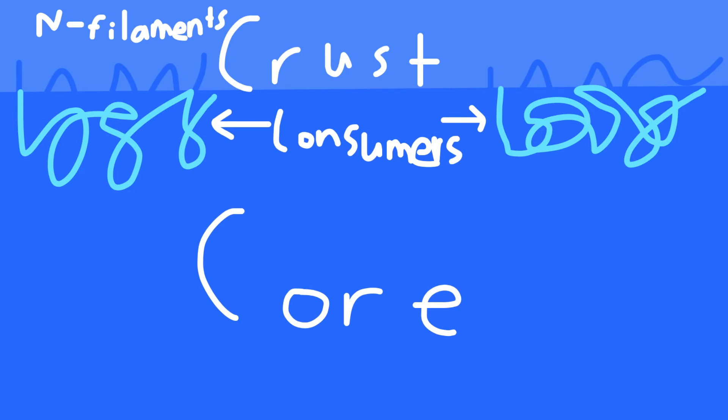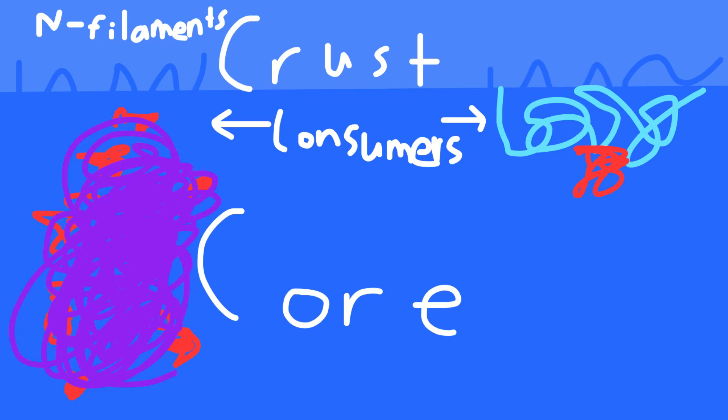Consumers absorb energy from the producers, either by being parasitic, directly absorbing from other organisms, or breaking apart other organisms.